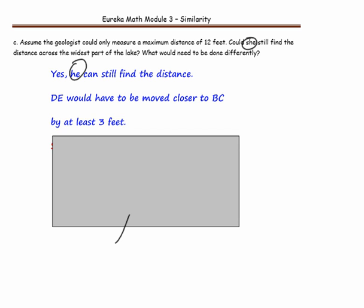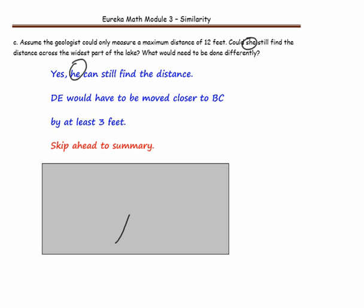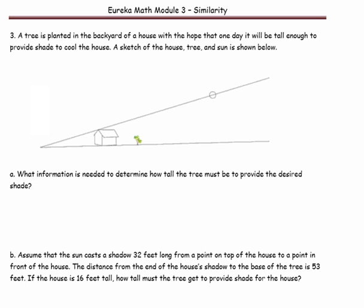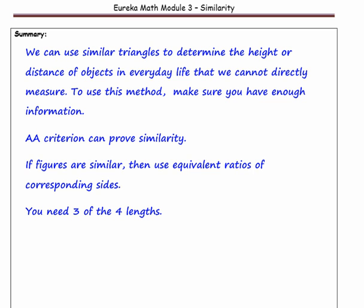In this lesson, we learned that we can use similar triangles to determine the height or distance of objects in everyday life that we cannot directly measure. To use this method, make sure you have enough information. The angle-angle criterion can prove similarity. If figures are similar, use equivalent ratios of corresponding sides — you need 3 of the 4 lengths.